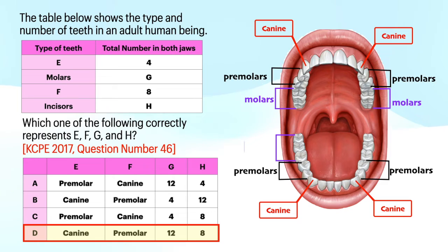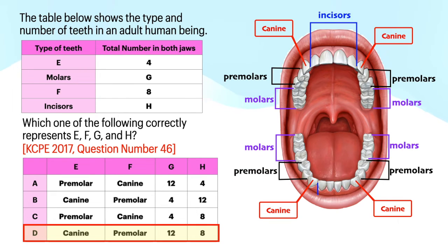The number of molars in both jaws of an adult human being are 12. The number of incisors in both jaws of an adult human being are 8.